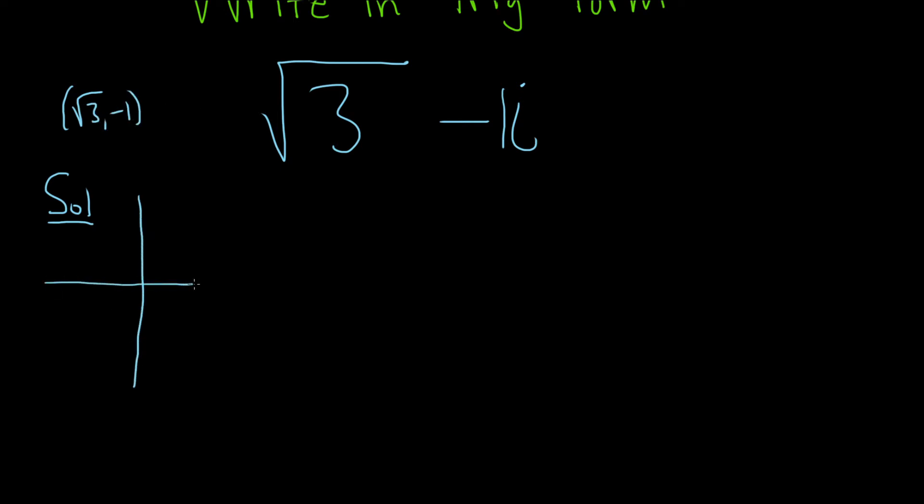So when you graph it in the complex plane, you're going to go right by square root of 3 and down 1. So maybe it's somewhere here. This is your complex number, square root of 3 minus i. And again, you can think of it this way here.